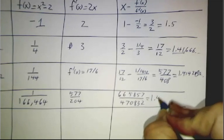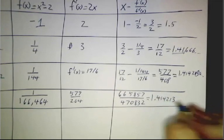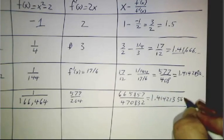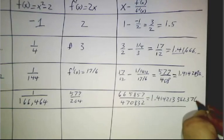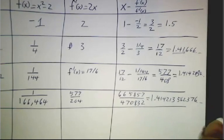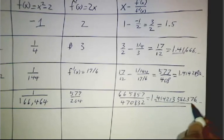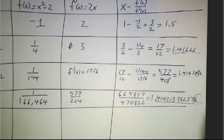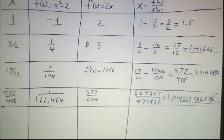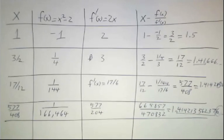This winds up being 1.414213, 5, 6, 2, 3, 7, 6 and so on. All these decimal places are right. It's wrong in the 11th decimal place. So Newton's method gives you really accurate answers.